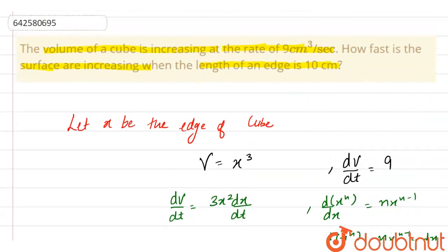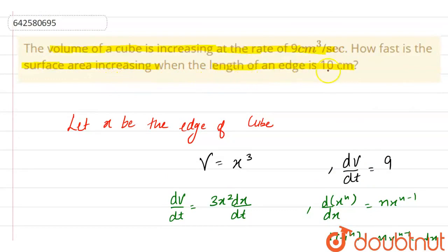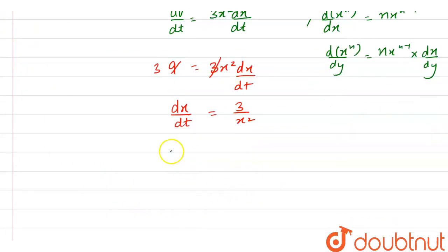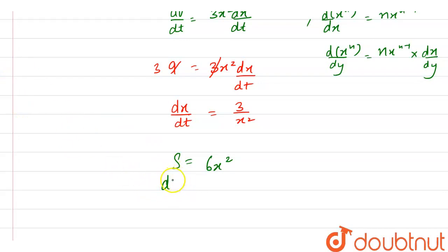The question asks how fast the surface area is increasing when the edge is 10 cm. We know that the surface area of a cube whose edge is x is S = 6x². If we differentiate both sides with respect to t, we get dS/dt = 12x·(dx/dt).